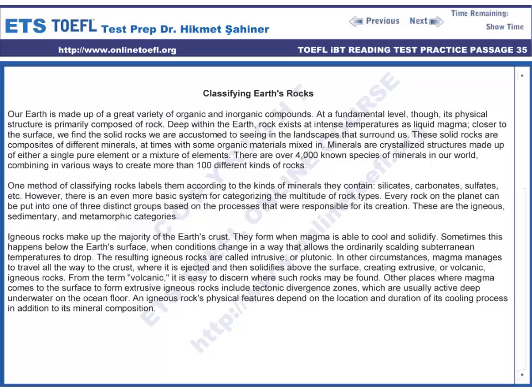In other circumstances, magma manages to travel all the way to the crust, where it is ejected and then solidifies above the surface, creating extrusive or volcanic igneous rocks. From the term volcanic, it is easy to discern where such rocks may be found. Other places where magma comes to the surface to form extrusive igneous rocks include tectonic divergent zones, which are usually active deep underwater on the ocean floor. An igneous rock's physical features depend on the location and duration of its cooling process in addition to its mineral composition.